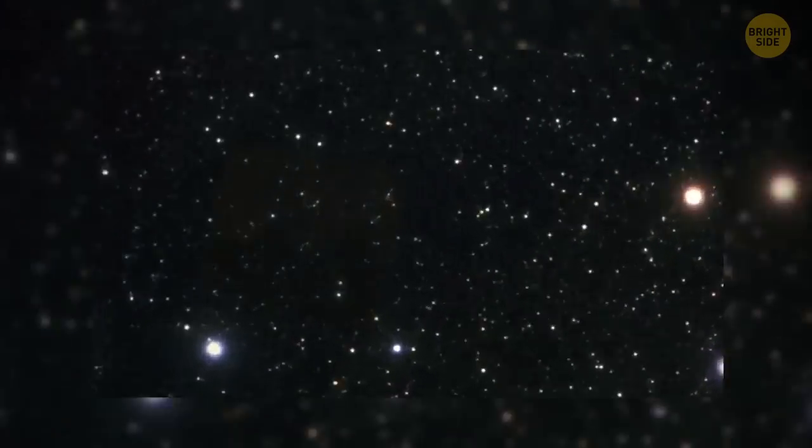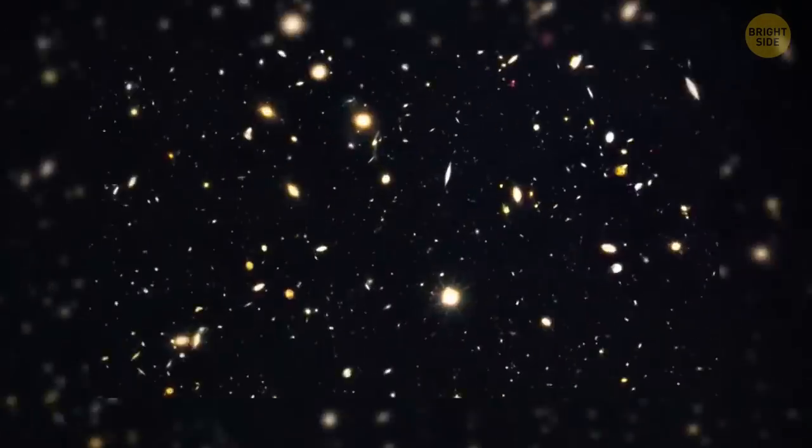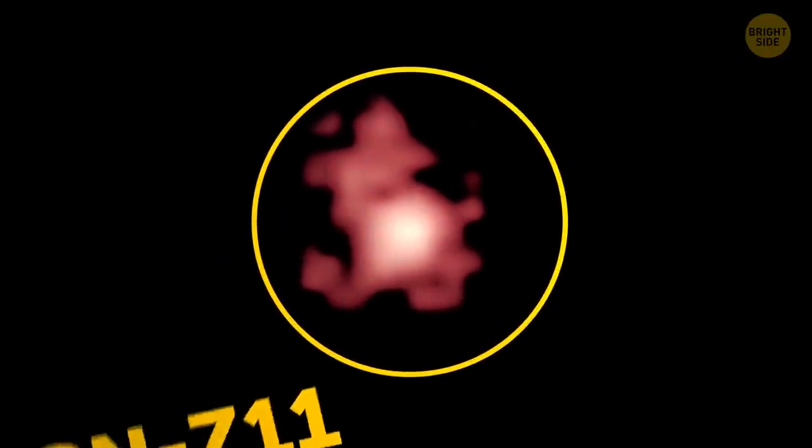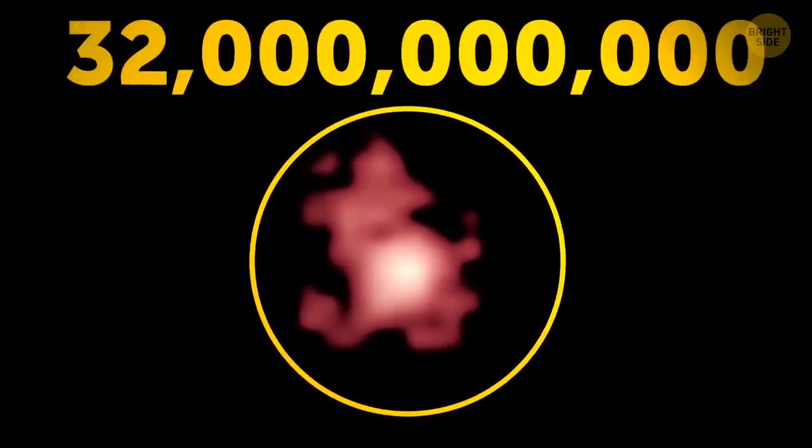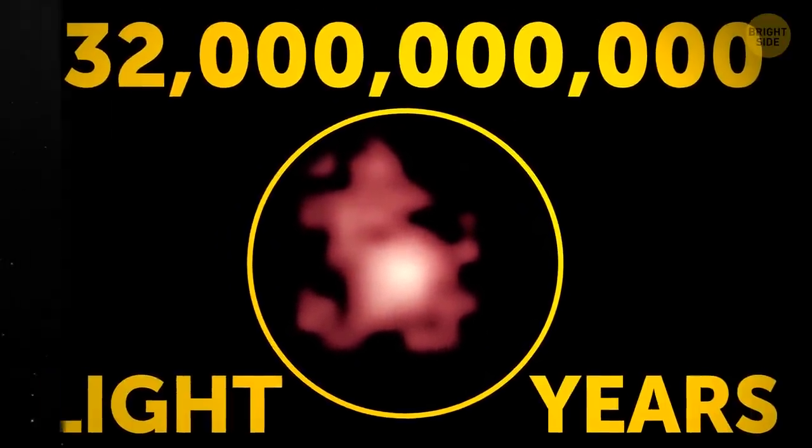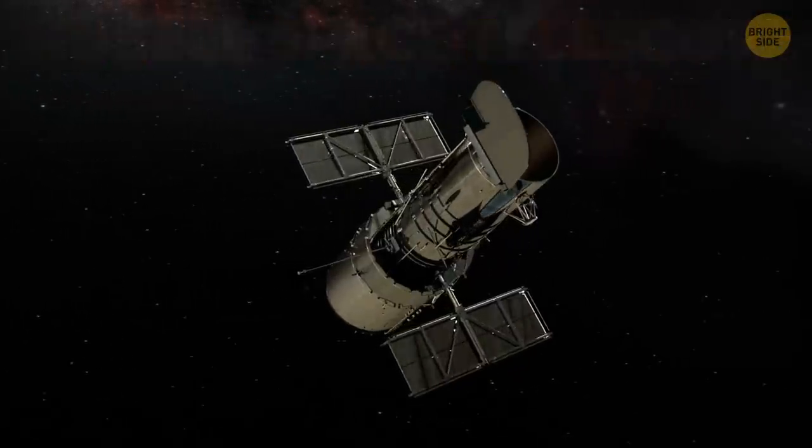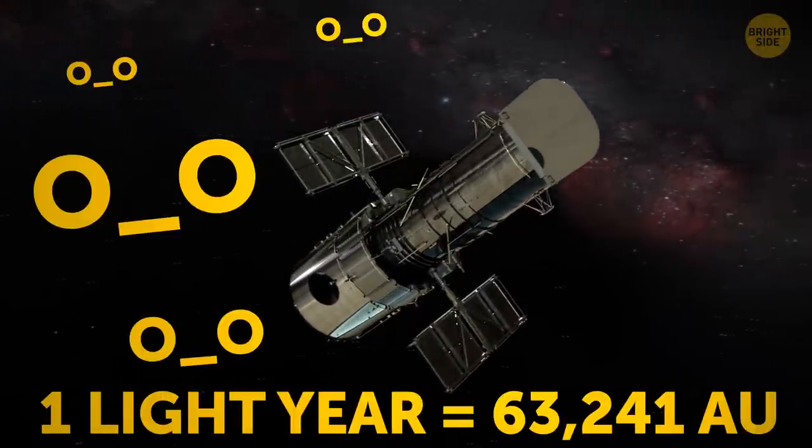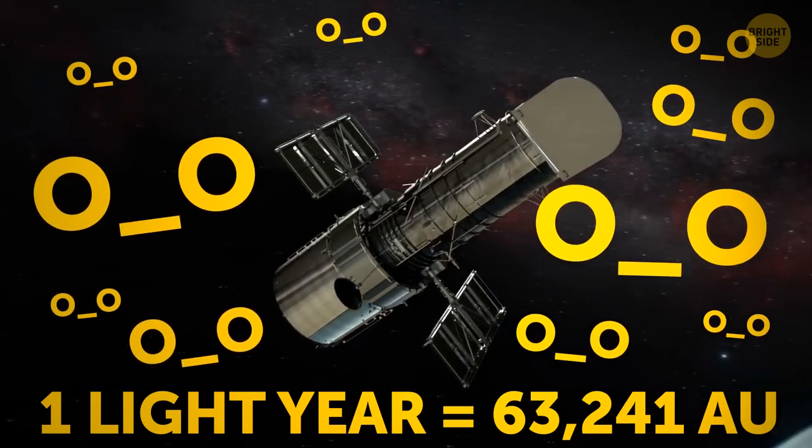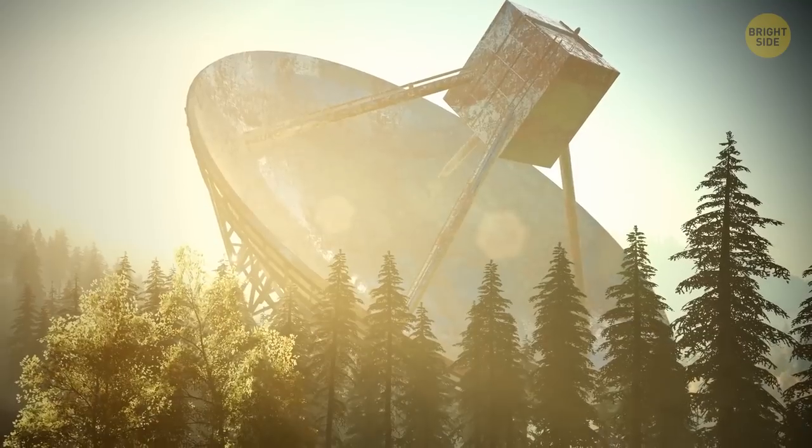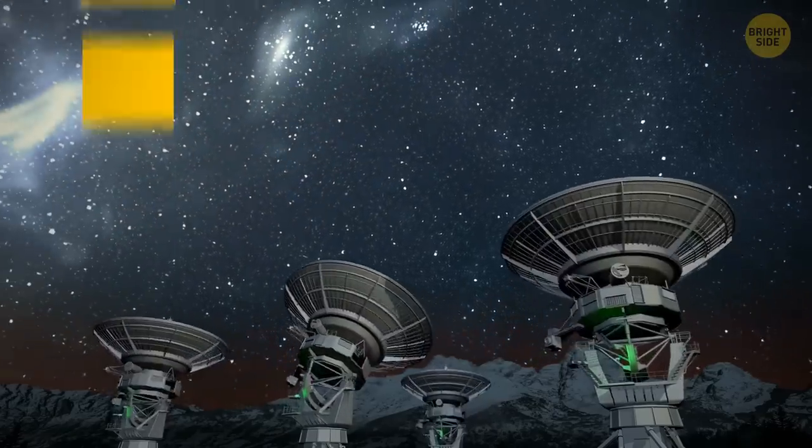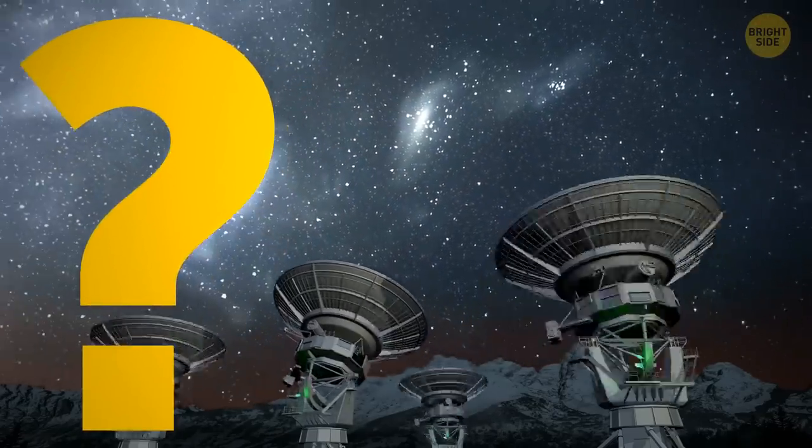For context, the most distant thing detected from Earth is the galaxy GNZ11. Cute name, huh? It sits a staggering 32 billion light years away. Even so, our telescopes can still spot it. And just one light year is the same as 63,241 astronomical units. Oof! So, if our tech can detect a galaxy that's so far away, how have we not been able to uncover Planet X?